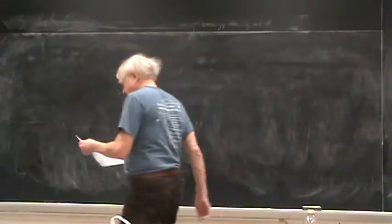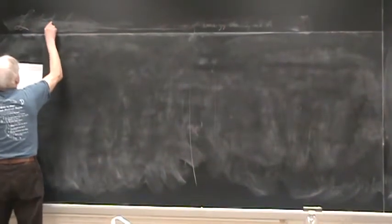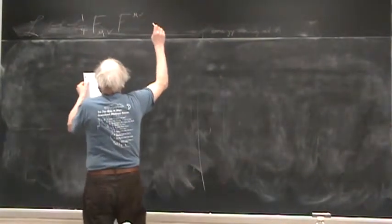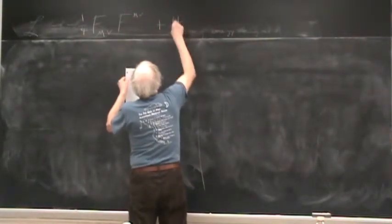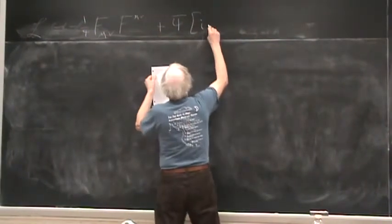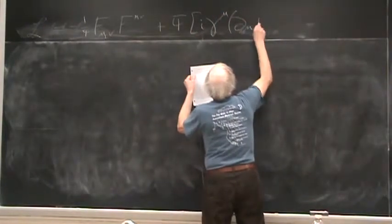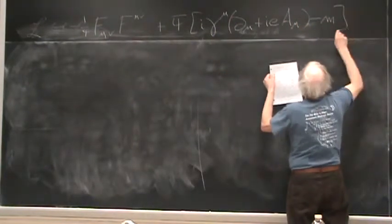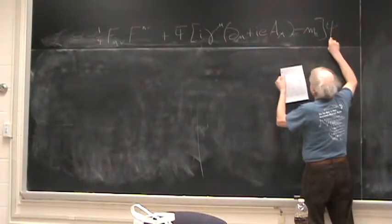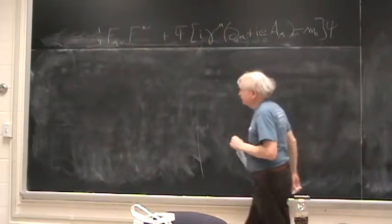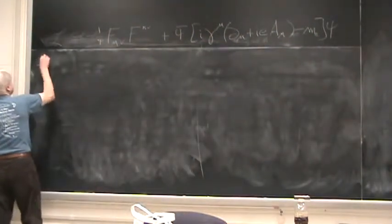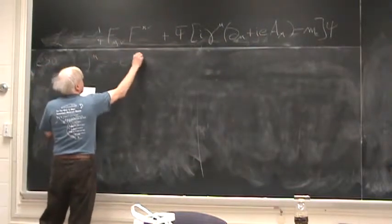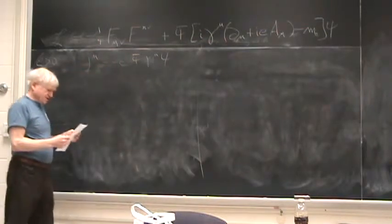Well, let me say what they are. First of all, what's the Lagrangian density? It's minus a quarter F-mu-nu squared plus psi-bar I gamma-mu, which is d-mu plus ie A-mu minus m — which is m_e if we're talking about electrons — psi. The convention here is that e is positive, and the current j-mu is minus e psi-bar. We saw that it was conserved before.